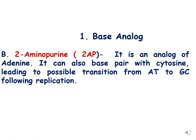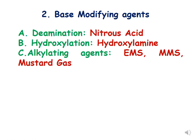The second base analog we are discussing is 2-aminopurine, an analog of adenine. It can base pair with cytosine, leading to a possible transition from A-T to G-C following replication. Similar to the previous example, 2-aminopurine will replace adenine, but instead of pairing with thymine it will pair with cytosine, leading to a transition mutation replacing A-T to G-C following replication.